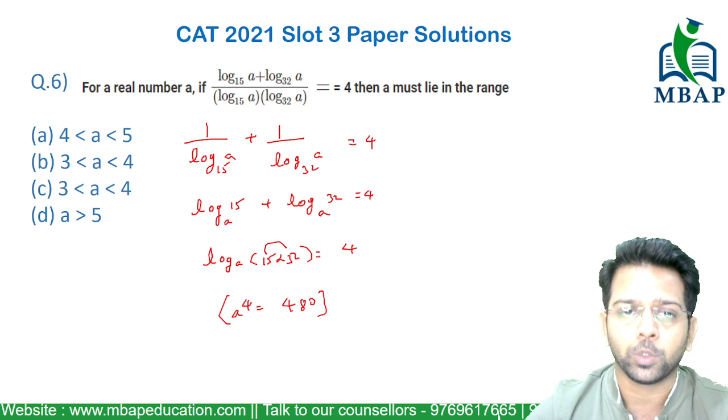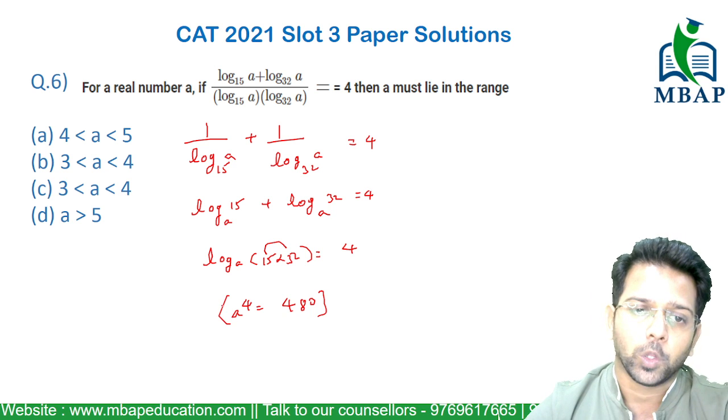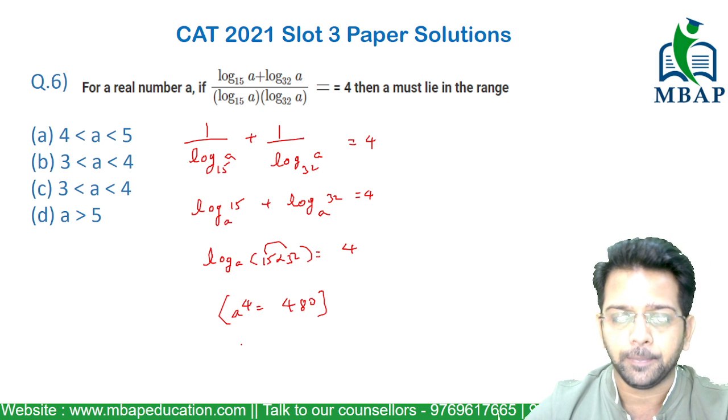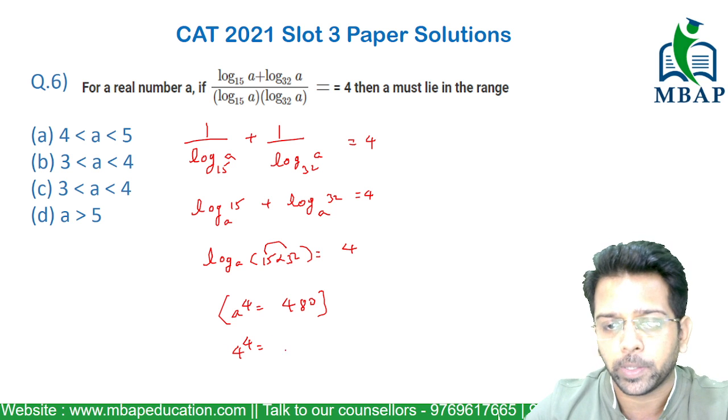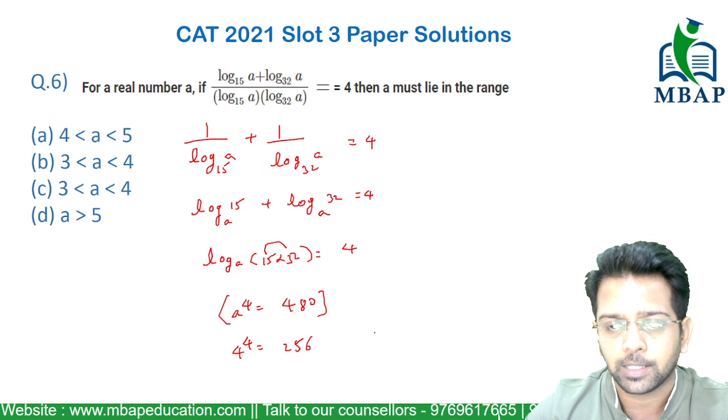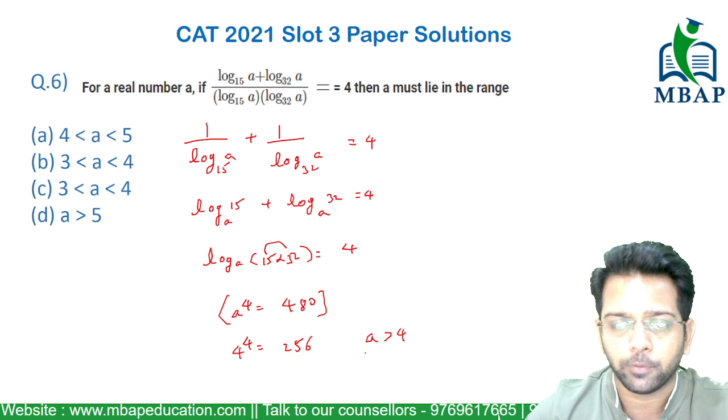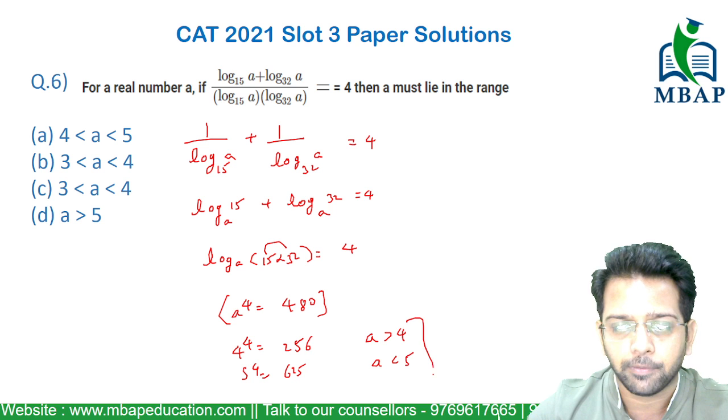And the question is only about finding the range of a. Now a raised to 4 is 480, and let's assume if a is 4, 4 raised to 4 will be 2 raised to 8, which is equal to 256. So a is definitely more than 4, and 5 raised to 4 will be 625. So a is definitely less than 5.